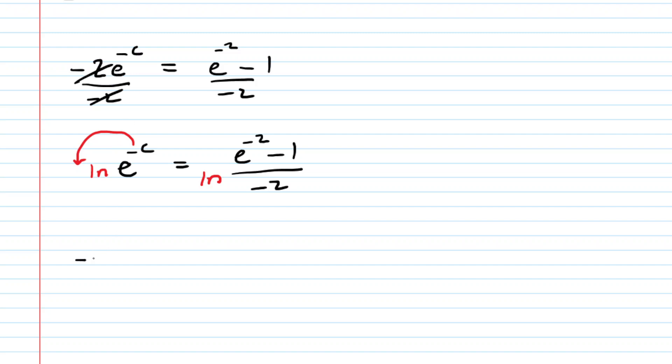So we have negative c multiplied by the natural log of e, and then on the other side we have the natural log of this quantity here. Now looking at our equation, we see we have a natural log of e, but natural log of e is just equal to 1. So this quantity is equal to 1, and negative c times 1 is still negative c.